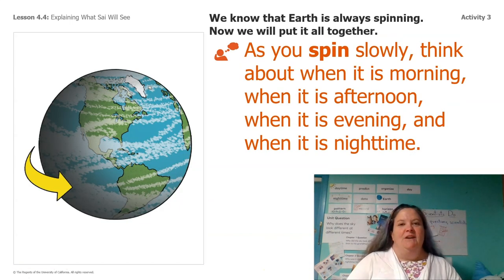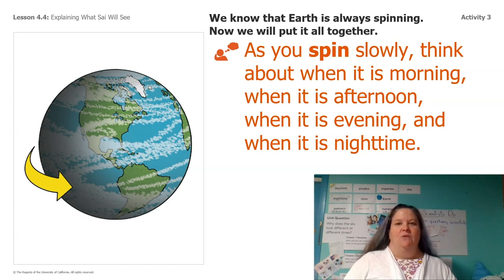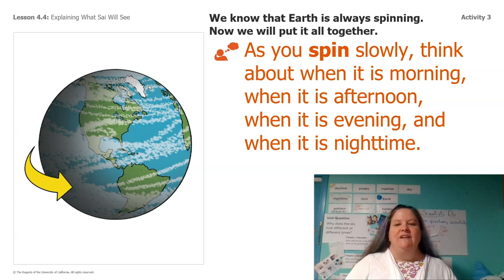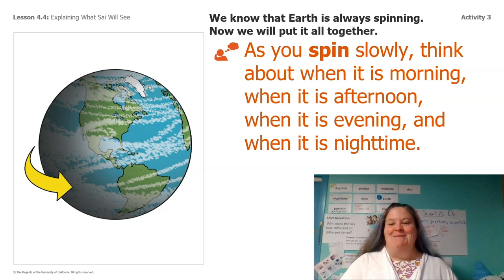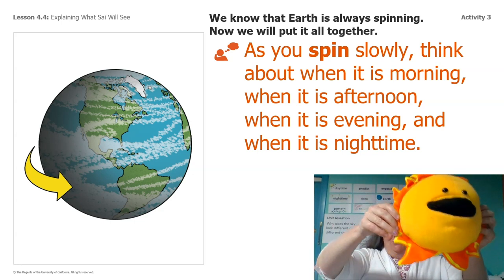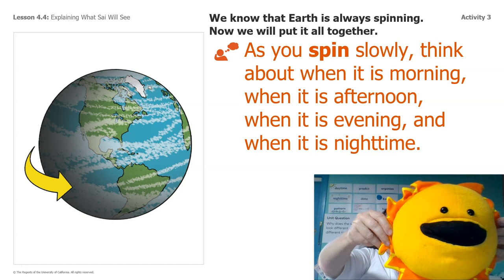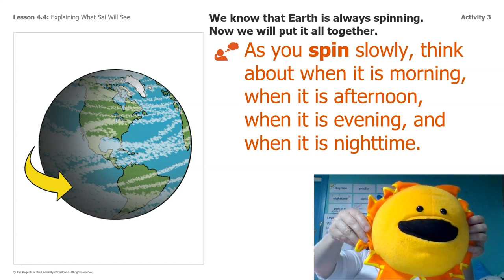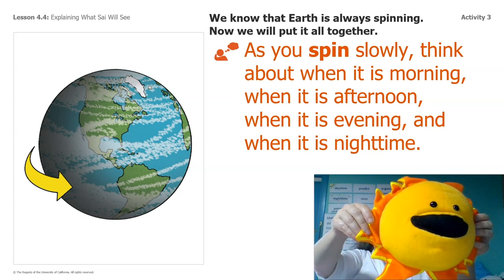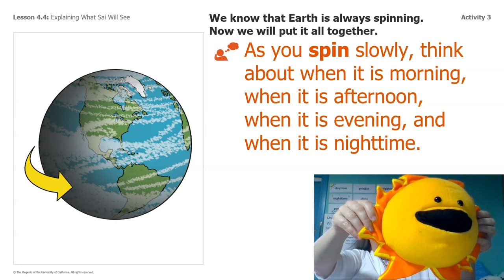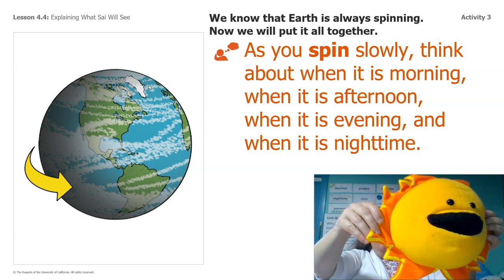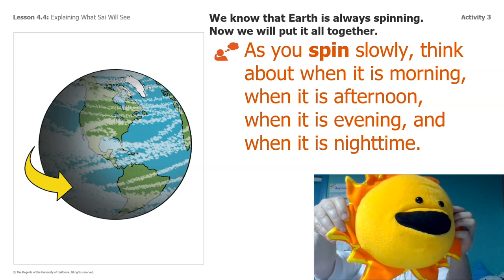Let's put it all together. We know that the earth is always spinning. So as you spin, slowly think about when it's morning, when it's afternoon, when it's evening, and when it's nighttime. I'm not going to spin this time so I can hold up the sun. Can you guys spin slowly around to show one day — morning, afternoon, evening, and nighttime.